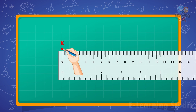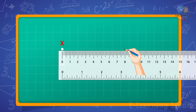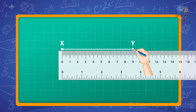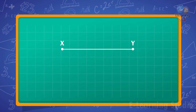Let's draw another line segment of 9 centimeters. Mark a point X against the zero mark of the ruler and a point Y on the 9 centimeter mark. Draw a line with a sharp pencil along the edge of the ruler to join these two points. We thus obtain line segment XY with a length of 9 centimeters. Thank you and happy learning!